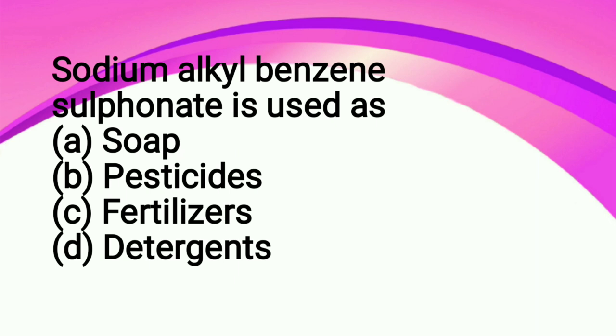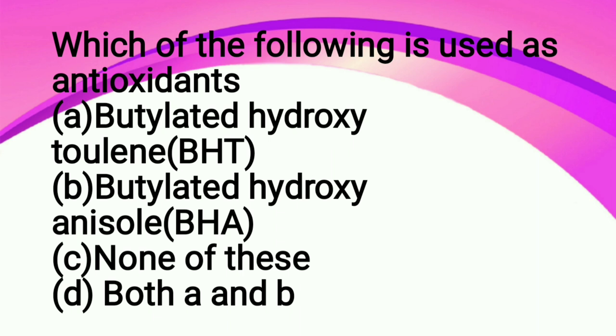Next question: which of the following is used as antioxidants? Option A butylated hydroxy toluene BHT, option B butylated hydroxy anisole BHA, option C none of these, option D both A and B. So the correct answer is both A and B. BHT and BHA are used as preservatives in food, we can use these two compounds as antioxidants so that food doesn't spoil quickly. So to increase the shelf life of packaged food, these antioxidants are used.